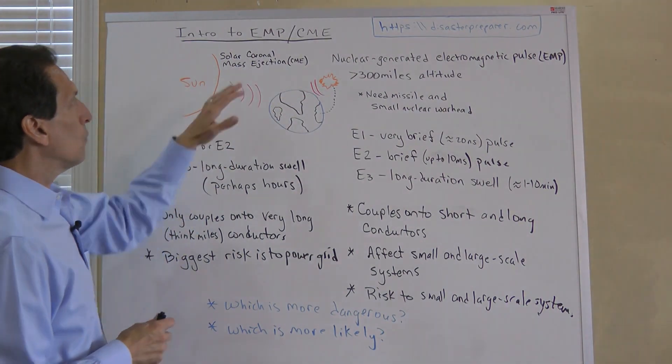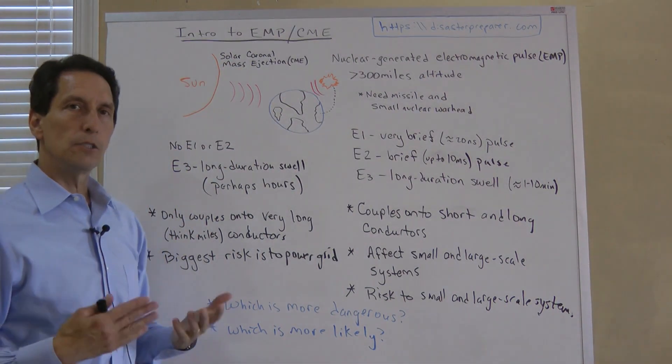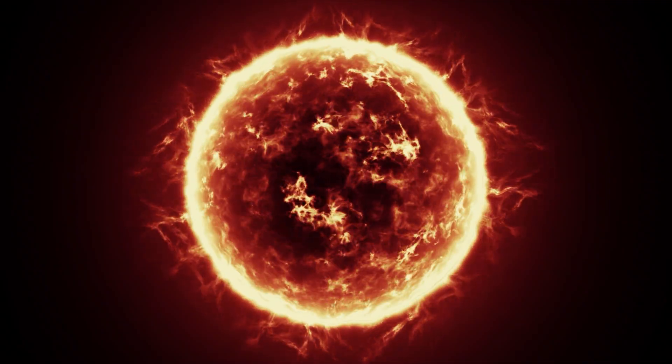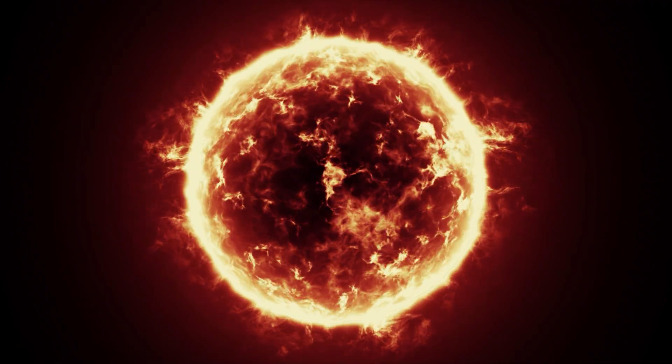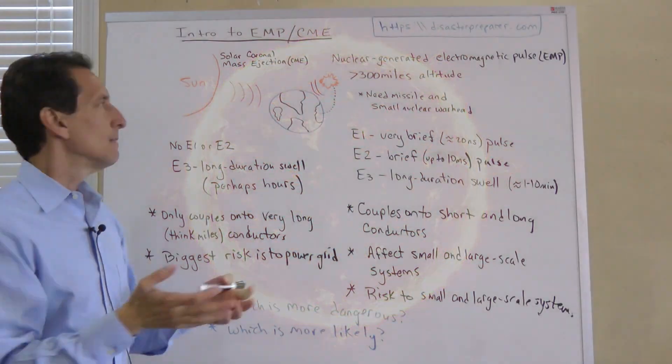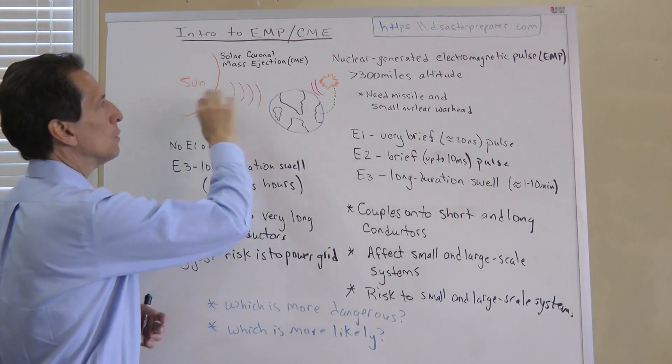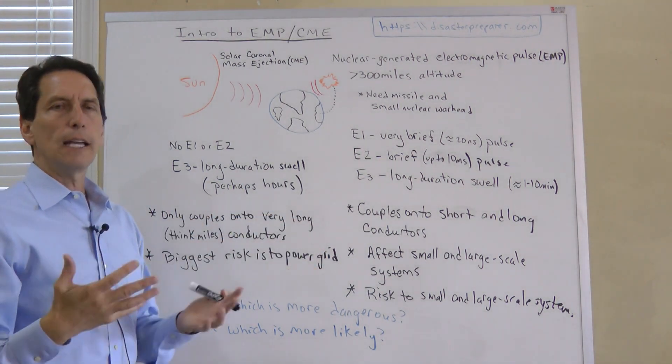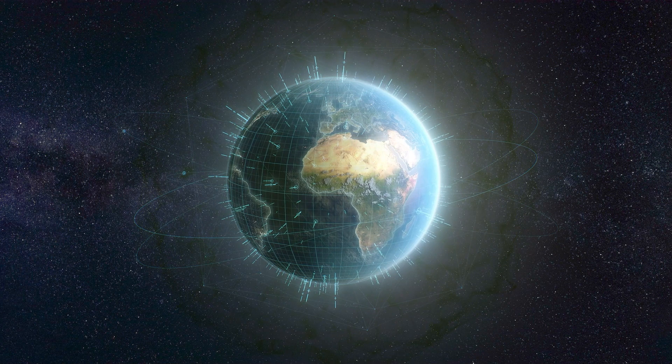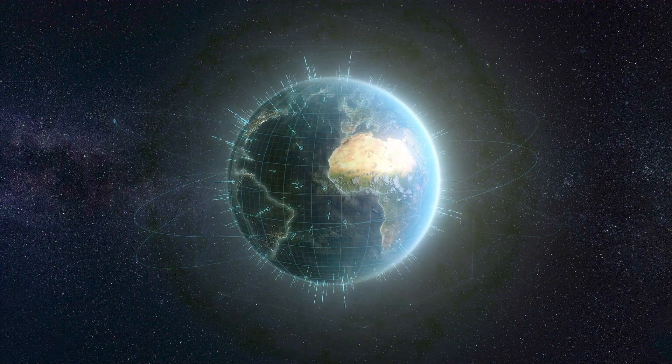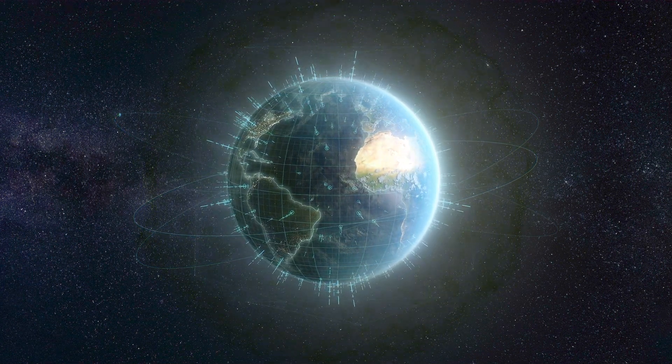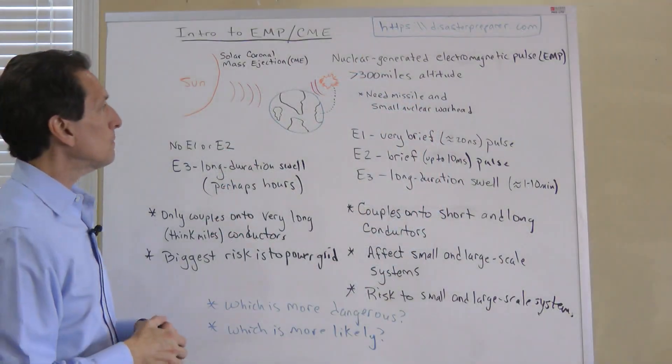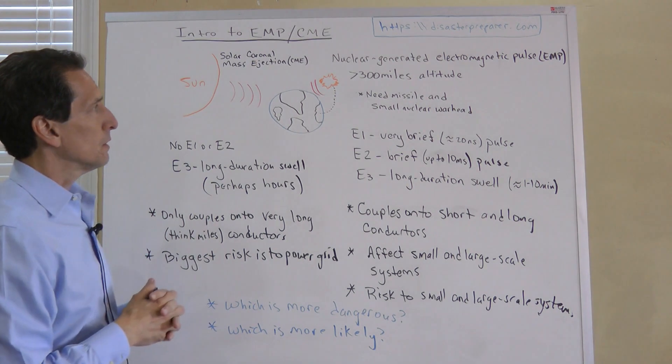I filled the whiteboard with information. I'll walk through it so we can get on the same page. Two distinct threats. A solar coronal mass ejection is our sun throwing off plasma, which is charged gas, and that charged plasma comes over and washes over the earth. When it does that, it creates currents that flow in very long conductors. There's a geomagnetic disturbance of our magnetic field lines that creates current in very long conductors.